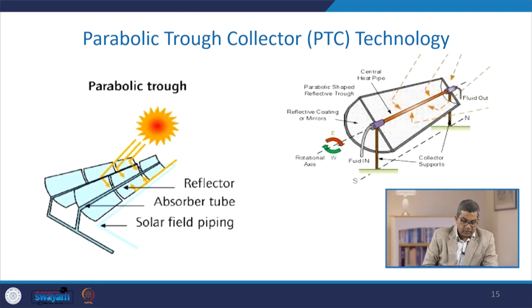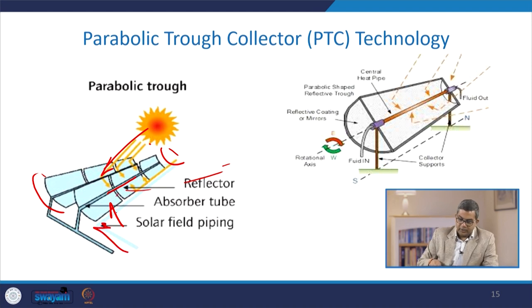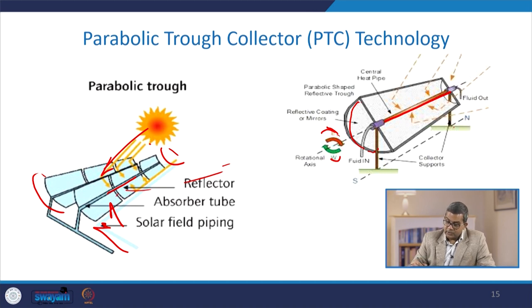Here you see the parabolic trough — these are the parabolic reflectors and sun rays are arriving and getting concentrated. These are the reflectors, these are the absorber tubes, and these are the solar field piping. Here you see the anatomy of these parabolic shape reflective troughs — this is the central heat pipe, the reflective coating mirrors, and this is the rotational axis which we are discussing about east to west and north to south, and these are the supports.